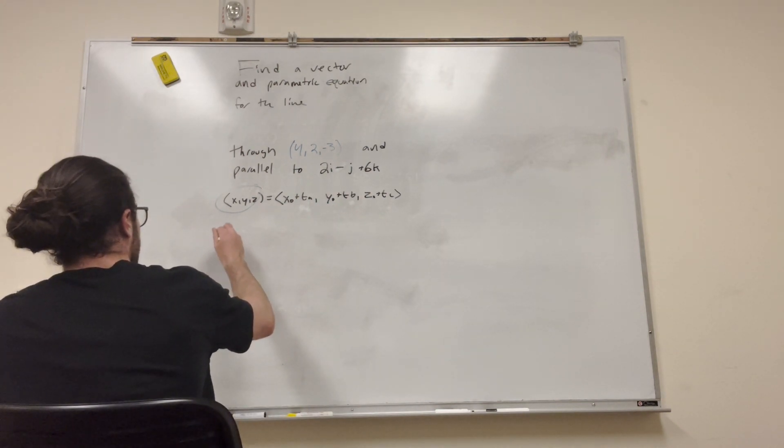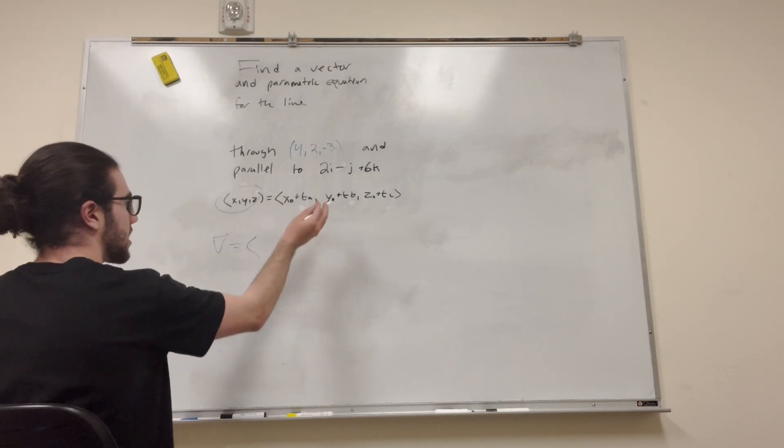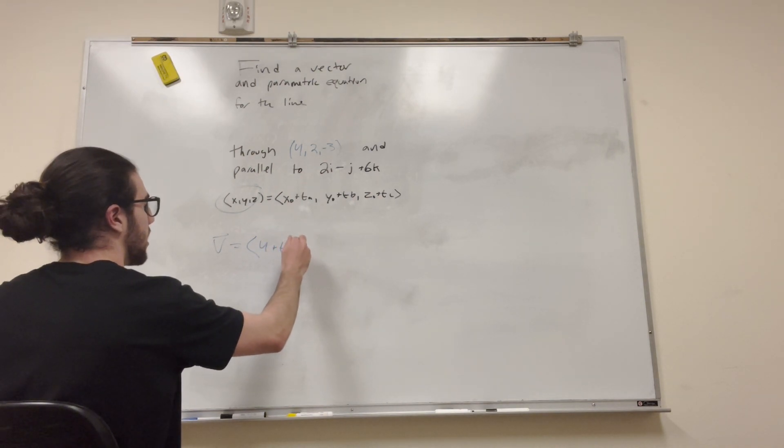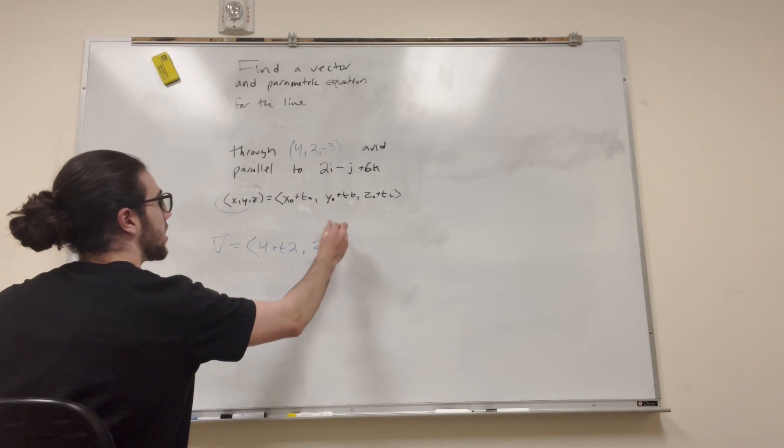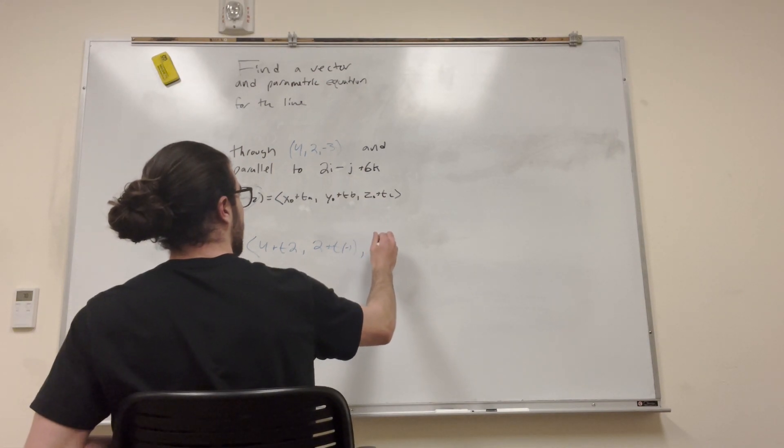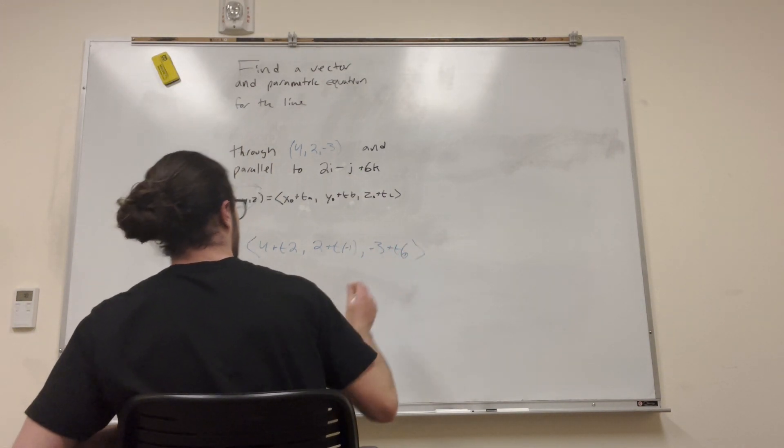All right, so we can say that a vector is equal to X naught, 4, plus T of 2, right? And then 2, plus T of B, so negative 1. And then negative 3, plus T of 6. Or T times 6.